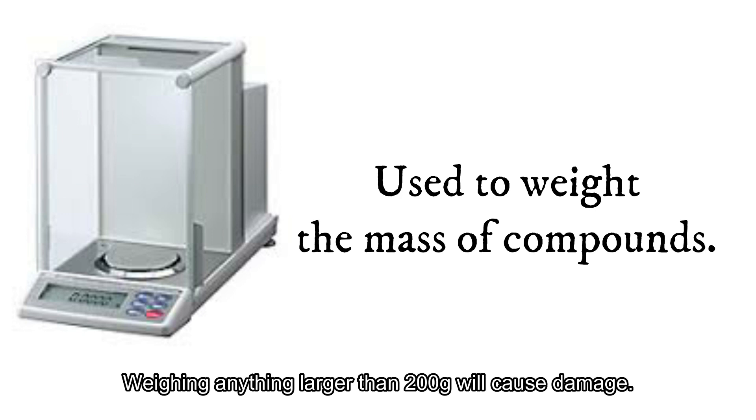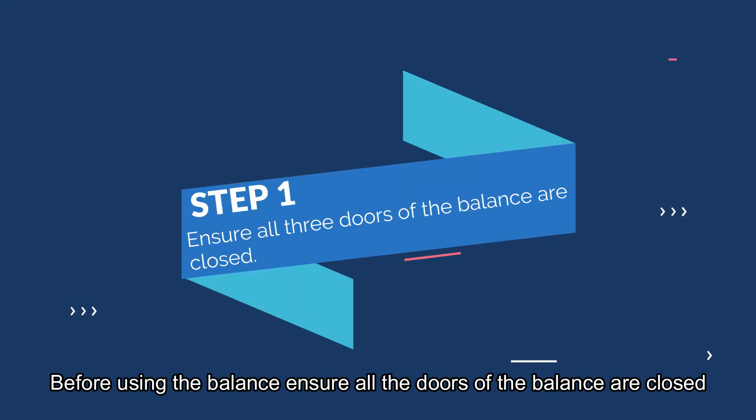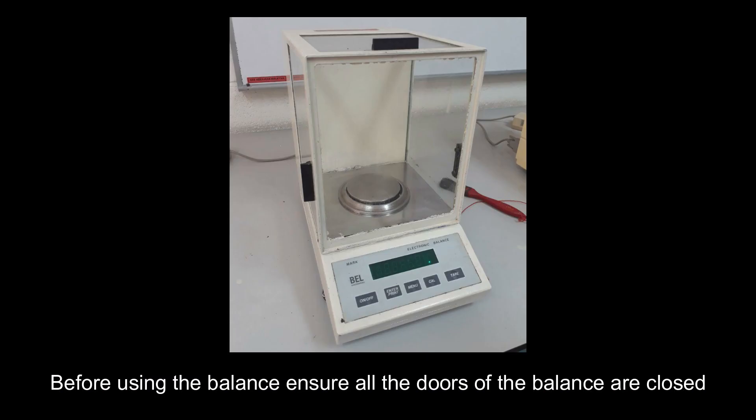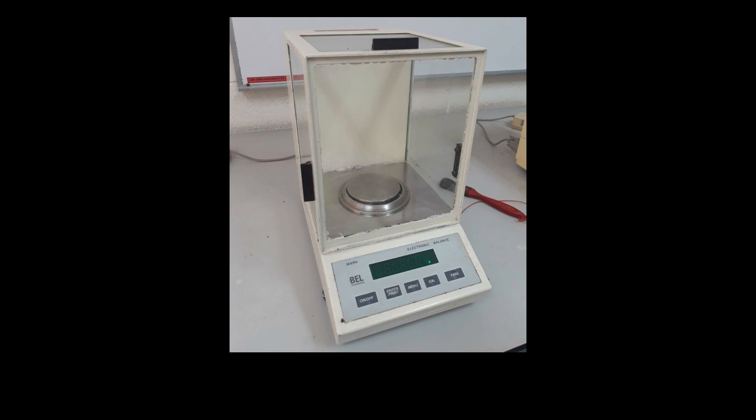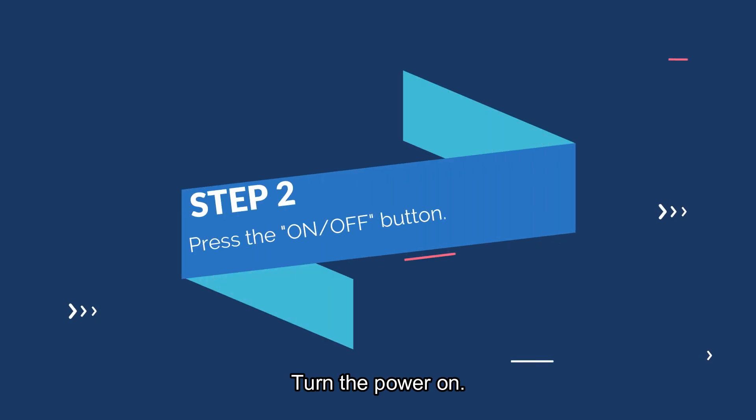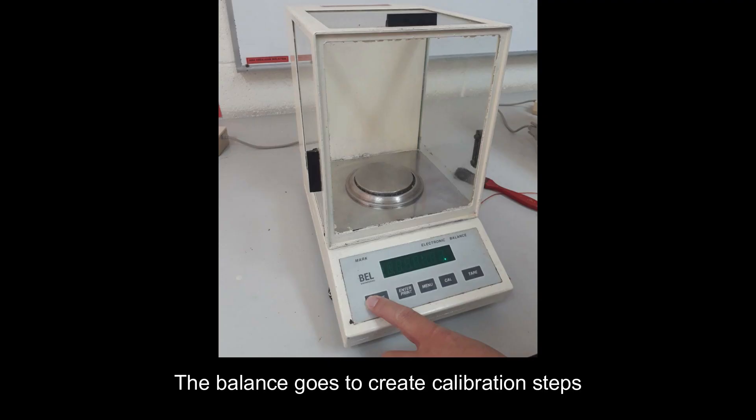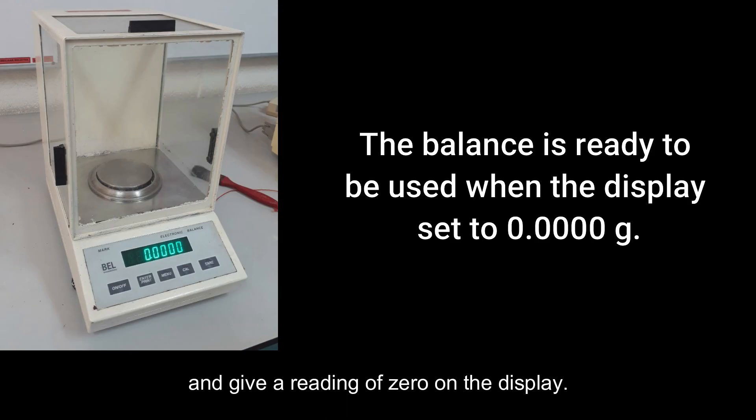Weighing anything larger than 200g will cause damage. Before using the balance, ensure all the doors of the balance are closed. Turn the power on. The balance goes to quick calibration steps and gives a reading of 0 on the display.